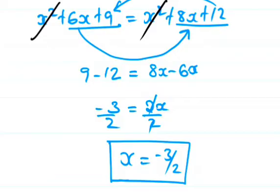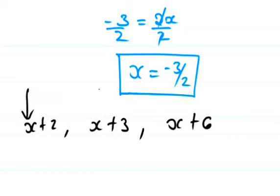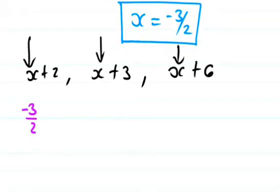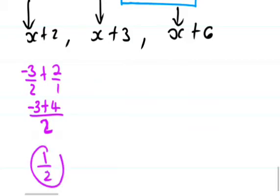Now we're going to substitute this value of x in our sequence to find the individual terms. For x plus 2, we have negative 3 over 2 plus 2. Using a common denominator of 2, that's negative 3 plus 4, which gives us positive 1. So we have 1 over 2 or one-half.